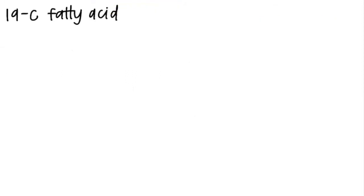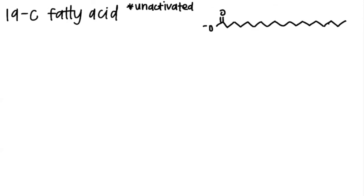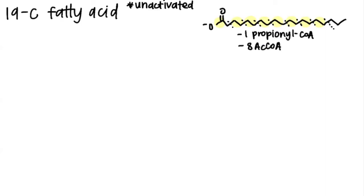The last two examples went through how to break down even carbon fatty acids, but now let's talk about odd carbon fatty acids. Since this is also labeled as a fatty acid, it is unactivated. For odd carbon fatty acids, we first count three carbons and make the first cut to yield the propionyl-CoA molecule. From there, we count two carbons at a time for each acetyl-CoA. From this fat, we yield one propionyl-CoA, eight acetyl-CoA, and eight cuts or eight rounds of beta oxidation.